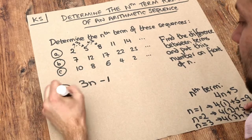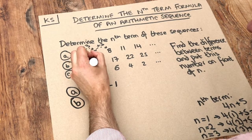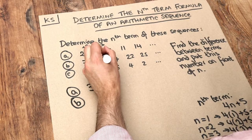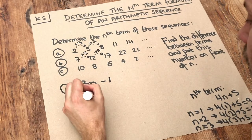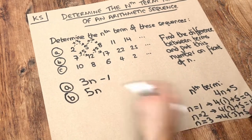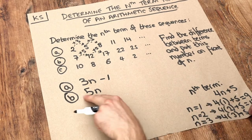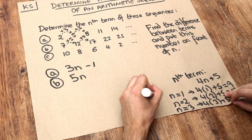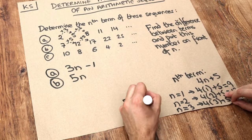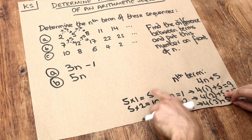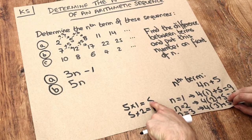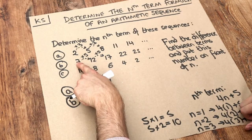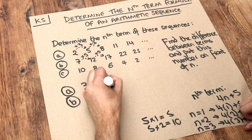For the second example, it's going up by 5 each time, so we start the formula with 5n. If we just had 5n, that would give us the 5 times table — the first term would be 5 times 1, which is 5; the second term 5 times 2, which is 10. But we don't want the first term to be 5 — we want it to be 7. So we need to add 2, giving us 5n + 2.